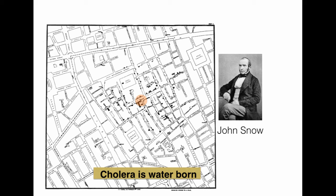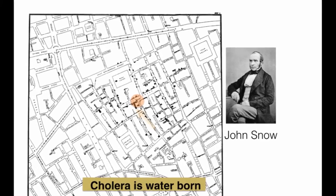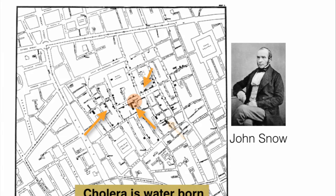He also had information about the positions of the water pumps. If you use the map and plot all the victims of cholera — the black dots you can see on the map — along with the water pumps, then you can really understand that the majority of the victims are near the water pump which is being affected. So you can say there's a correlation between the disease spreading and people using the same infected water pump.